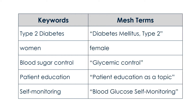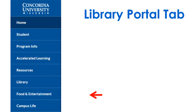In the MeSH database, we locate the MeSH terms: diabetes mellitus type 2, female, glycemic control, patient education as a topic, and blood glucose self-monitoring. Access Health Sciences databases on the library tab and portal under Quick Links.